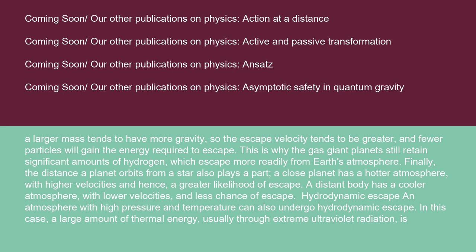Finally, the distance a planet orbits from a star also plays a part. A close planet has a hotter atmosphere, with higher velocities and hence a greater likelihood of escape. A distant body has a cooler atmosphere, with lower velocities and less chance of escape.